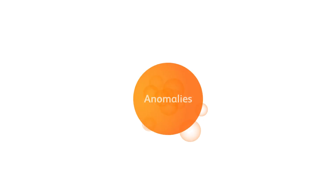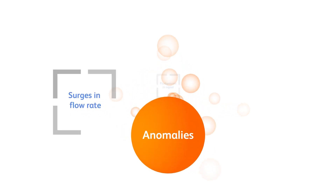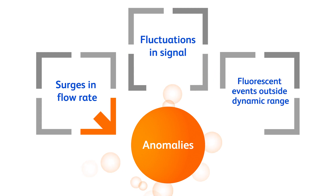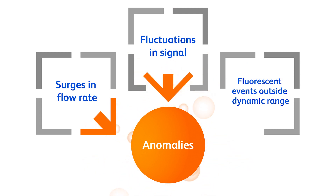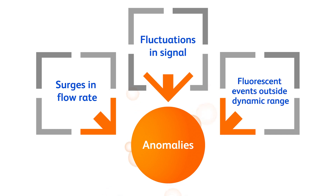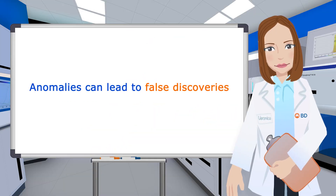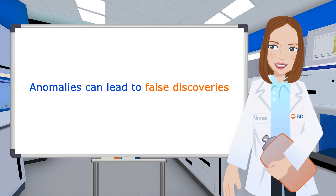These abnormal events, or anomalies, can derive from sudden changes in flow rate, fluctuations in signal stability, and fluorescent events outside the dynamic range of the instrument. While in some cases these anomalies may represent only a minor fraction of your data, they can still have a major impact on downstream analysis.